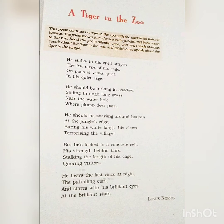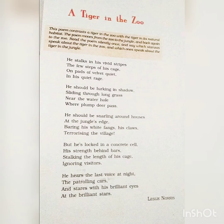He stalks in his vivid stripes the few steps of his cage — the tiger moves quietly and silently within the cage. He pads on velvet — the paws of the tiger are compared to velvet, soft and quiet. In his quiet rage — this means the tiger has a violent, uncontrollable anger inside him.